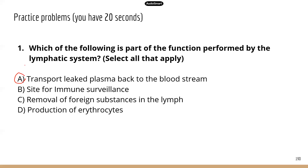Answer B — it's a site for immune surveillance — is correct. Lymph can pick up pathogens, and as lymph circulates through lymph nodes and other lymphoid organs, immune cells can inspect it and be alerted to any pathogens present. Answer C — removal of foreign substances in the lymph — is also correct, going hand in hand with B, as immune cells filter out foreign substances. Answer D — production of erythrocytes — is not correct. The lymphatic system is not responsible for making red blood cells. So the correct answers are A, B, and C.